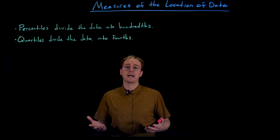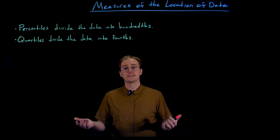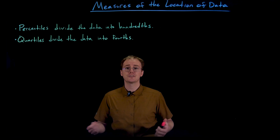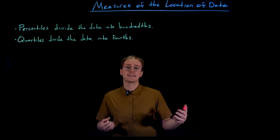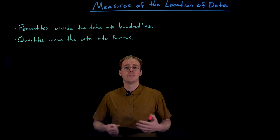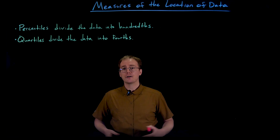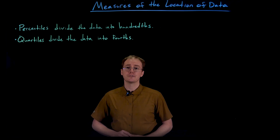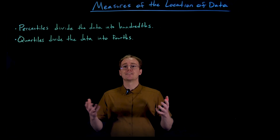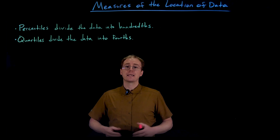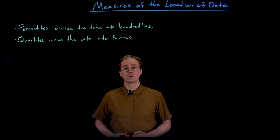Furthermore, if we do know the size of the data set and we're comparing similar quantities from different data sets — maybe one data set has a size of 100 and another has a size of 2,500 — then knowing how many values are above or below given values can be interpreted differently. So to alleviate some of these issues and get everything to the same scale, we're going to be using percentiles and quartiles.